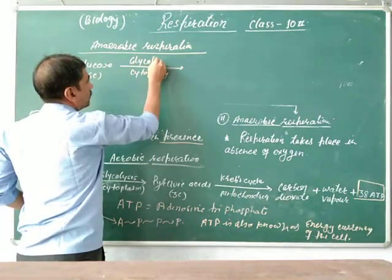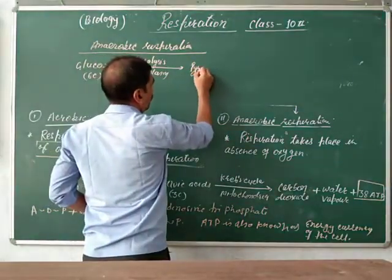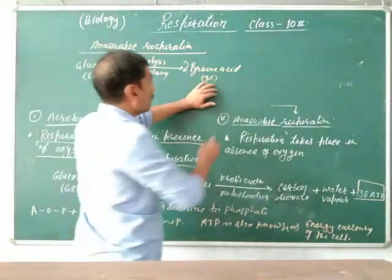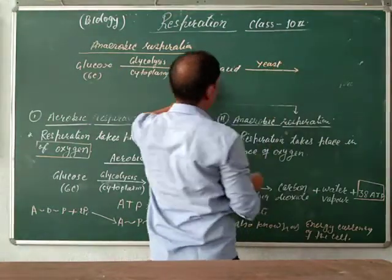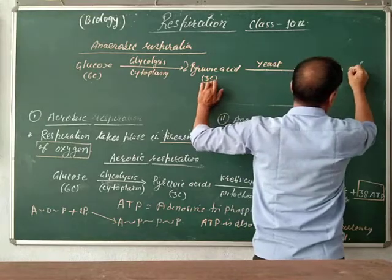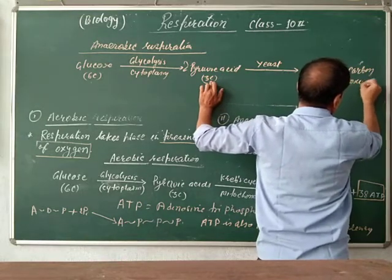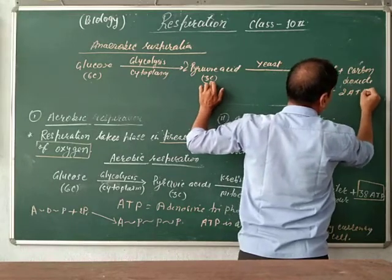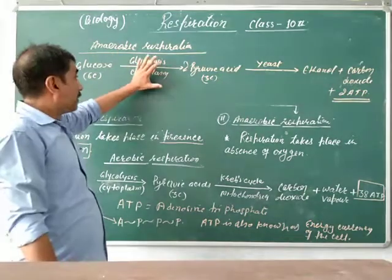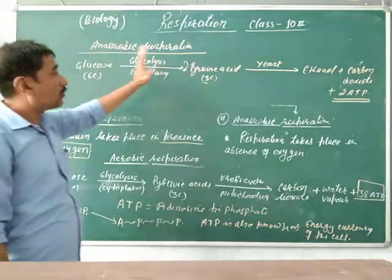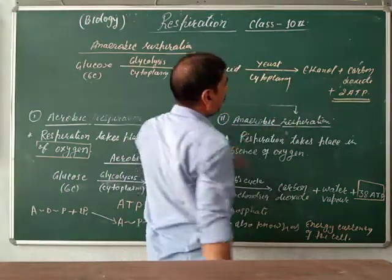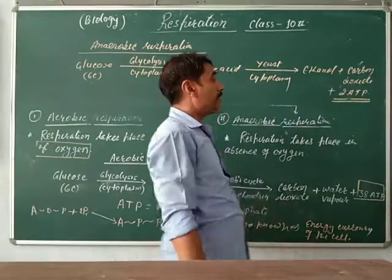By the glycolysis process, glucose is broken down into 2 molecules of pyruvic acid — these are 3-carbon molecules. In the presence of yeast, pyruvic acid is converted into ethanol plus carbon dioxide plus only 2 ATP molecules. This is the anaerobic respiration in yeast. Glucose molecules by glycolysis give two molecules of pyruvic acid, which in the presence of yeast inside the cell gives ethanol plus carbon dioxide plus 2 ATP molecules.